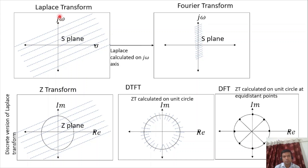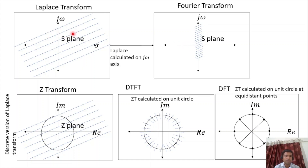Regarding the region of convergence: if it includes the j-omega axis, stability is guaranteed. Because the Fourier transform is defined only on the j-omega axis, it is defined only for stable signals. This is the proof of why Laplace is defined for both stable and unstable signals, while Fourier is defined for stable signals only.